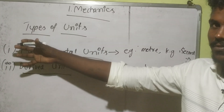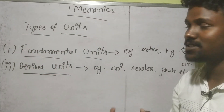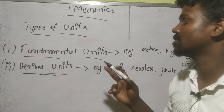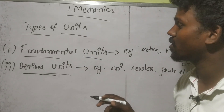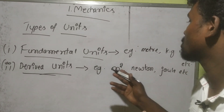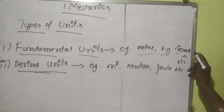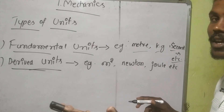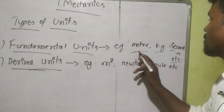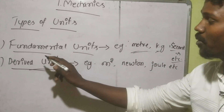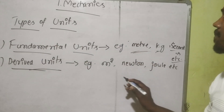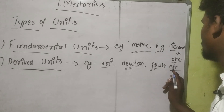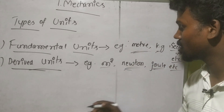Types of units: there are two types of units — fundamental units and derived units. Fundamental units are units of fundamental physical quantities, for example meter, kilogram, and second. Derived units are obtained from fundamental units; examples include meters squared, newtons, joules, and so on. These are all derived units.